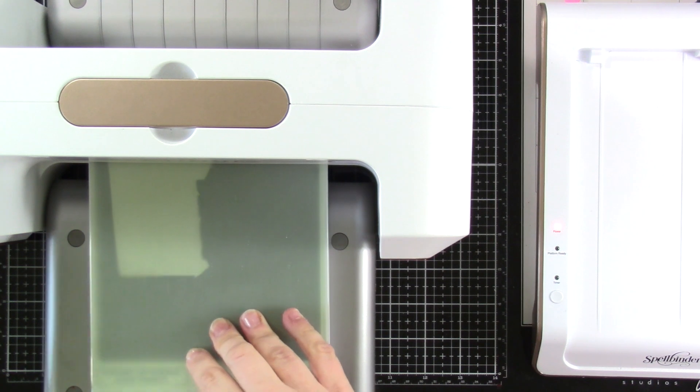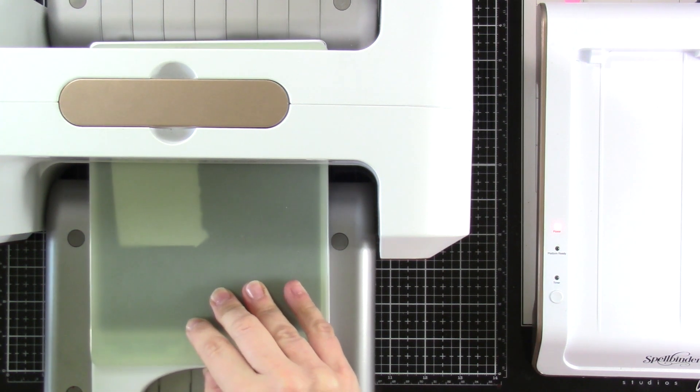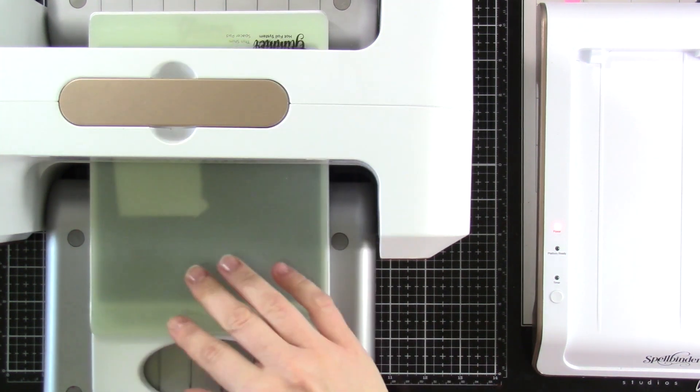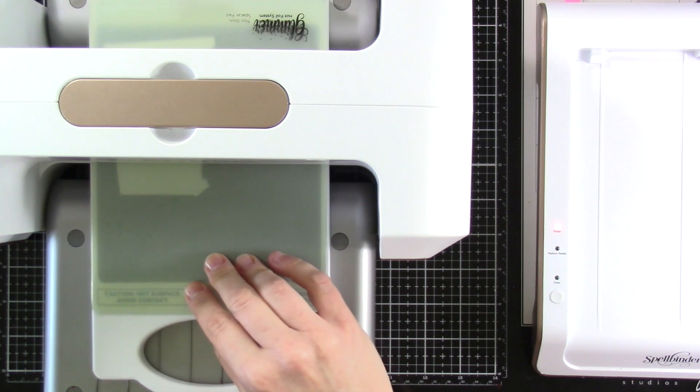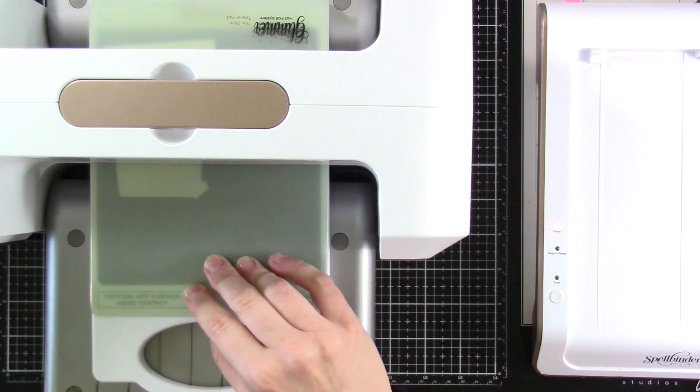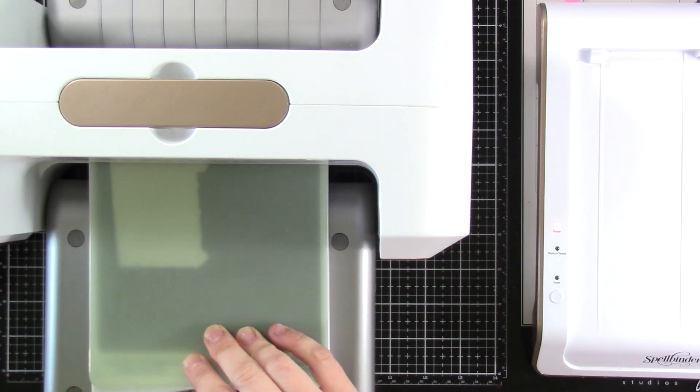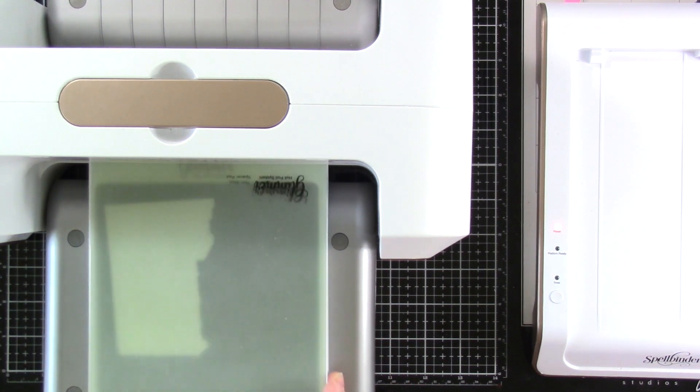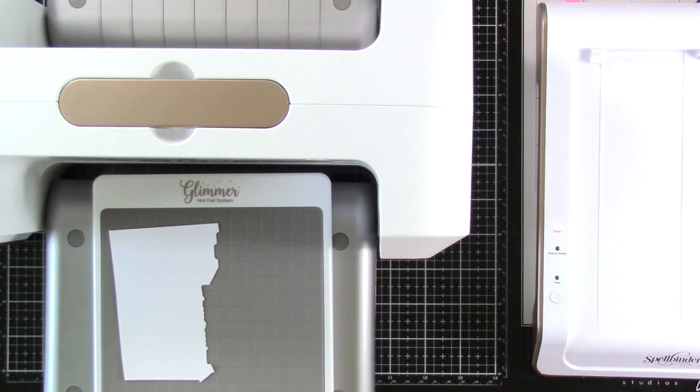And then I run that very slowly, that whole system, through my die cutting machine. And I'll even kind of go back and forth a little bit, just making sure that I get that nice and foiled. I'll go back a couple times. And then once it's done, I try to peel everything up without shifting things.